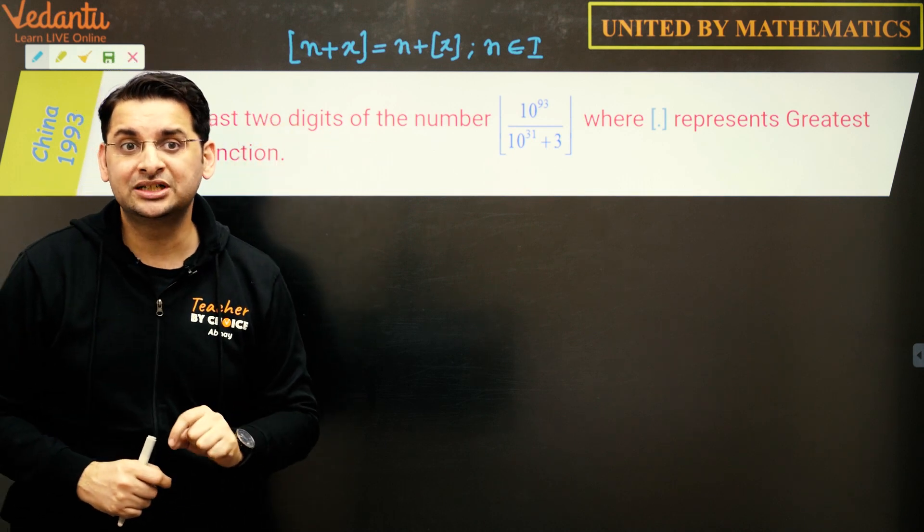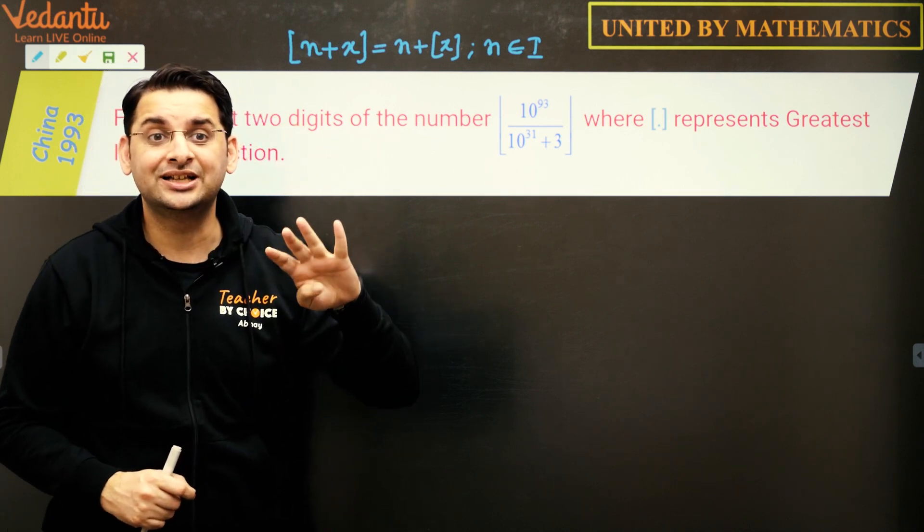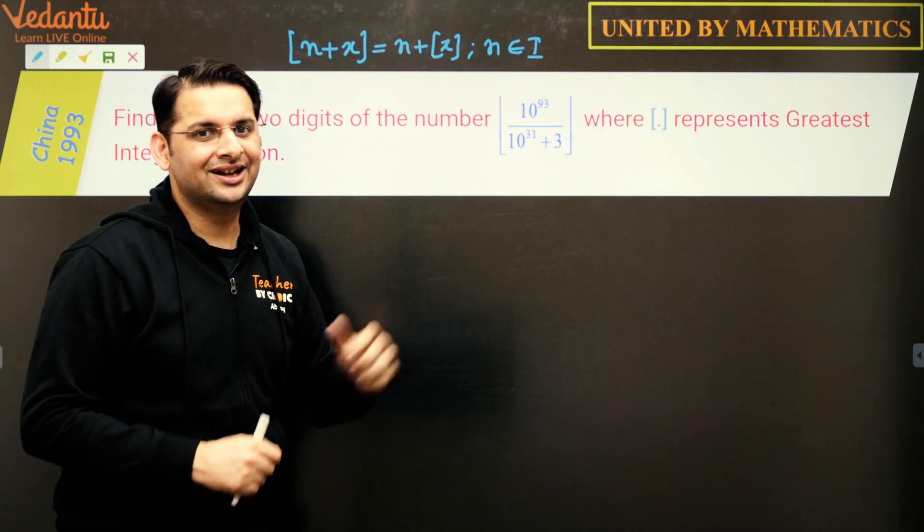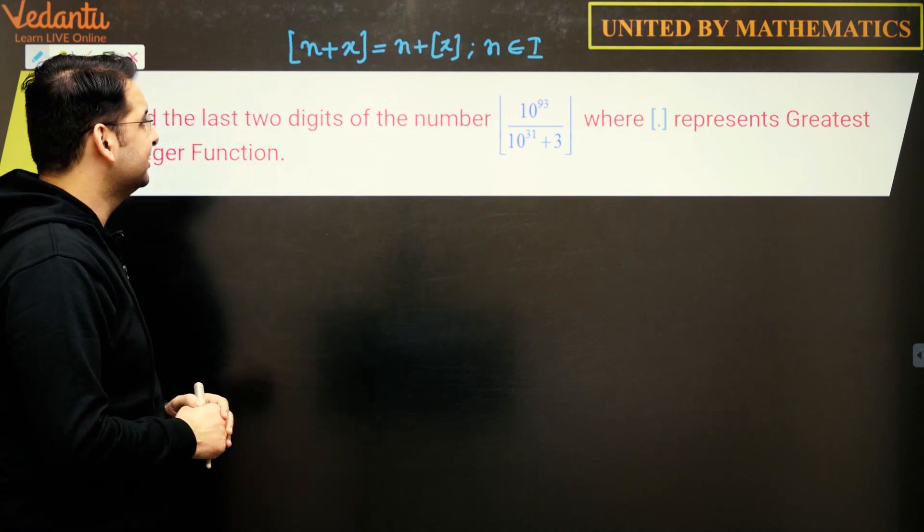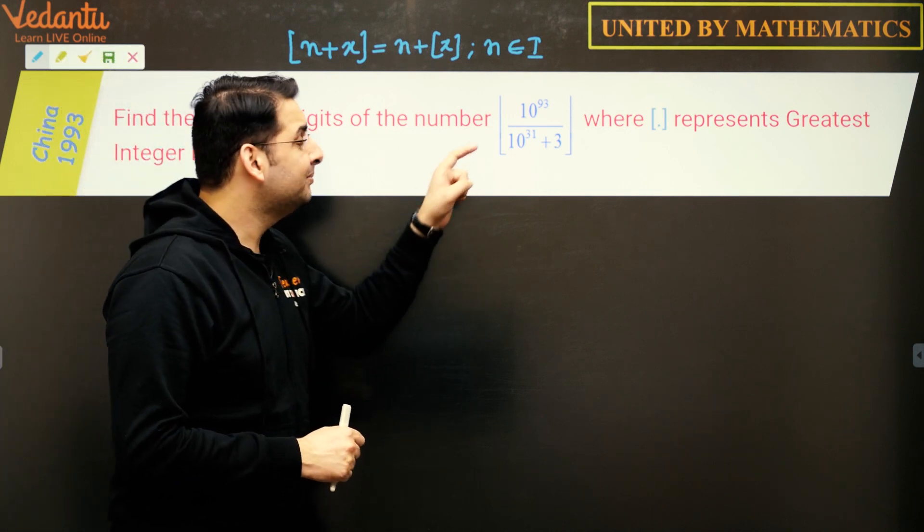Let us try to solve this question. In fact we will extend this question. What is being asked, we are being asked last two digits, we'll find last three digits, last four digits as well as last five digits. First of all, this number 10 to the power 31 looks scary, 10 to the power 93 looks scary.